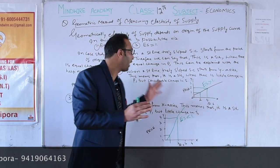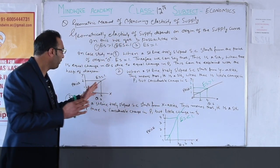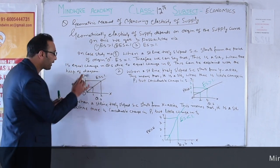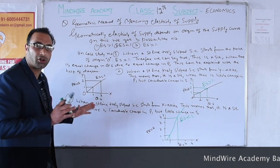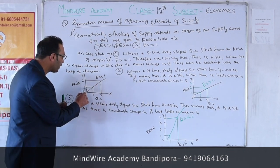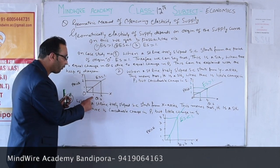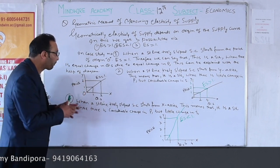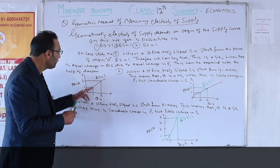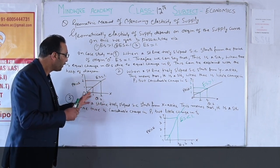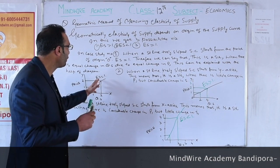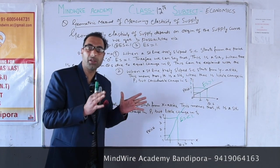This can be explained with the help of a diagram. On the X-axis we have quantity supplied and on the Y-axis we have price. When price was one, supply was one unit. When price rises from one to two, supply also increases from one to two. It means there is equal change in both price and supply. We call it elasticity of supply equal to 1.